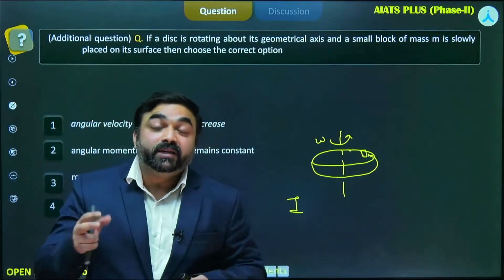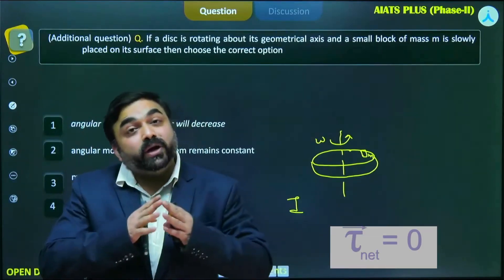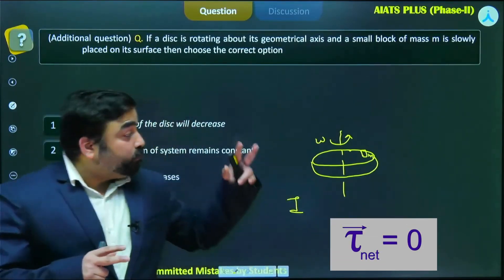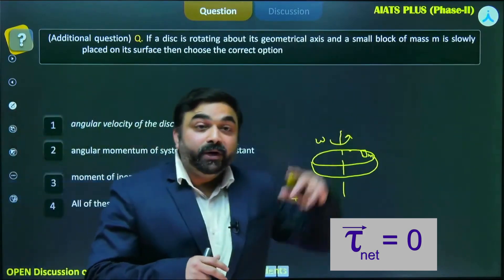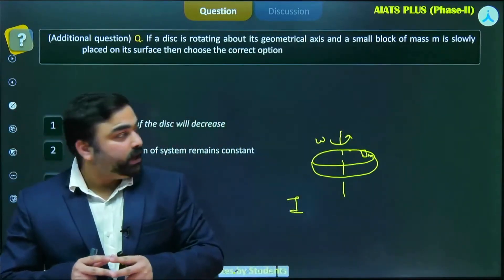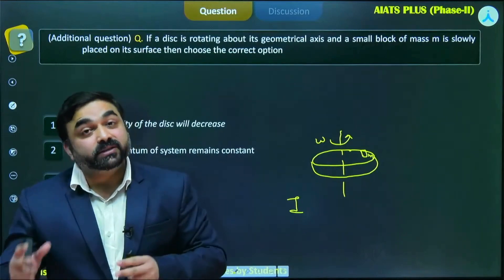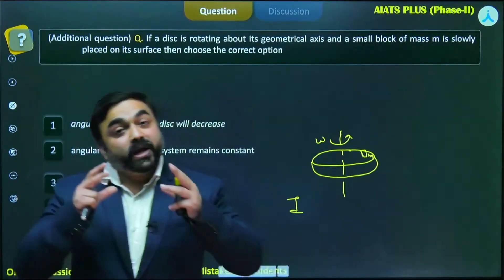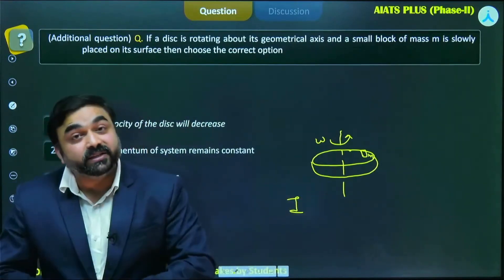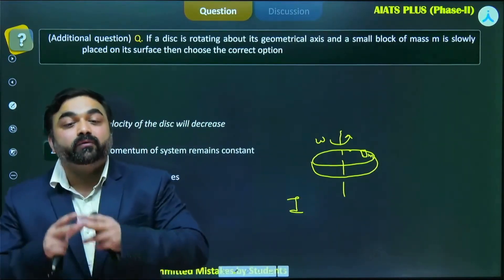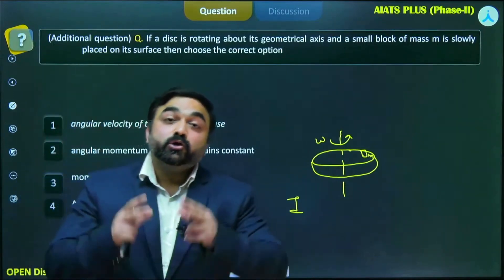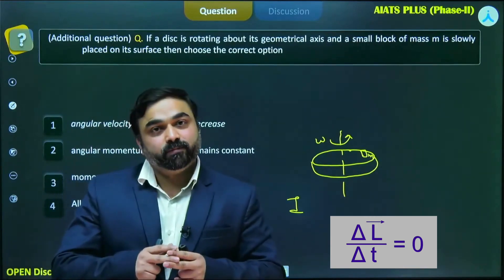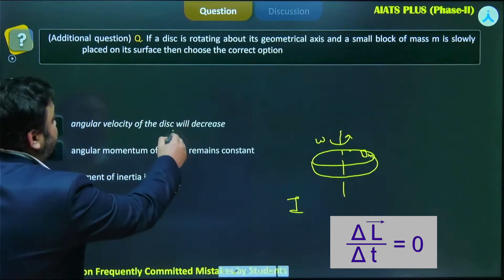...there is no external torque acting on the system. So moment of inertia increases, no external torque means angular momentum will be conserved. If moment of inertia is increasing, then angular velocity has to decrease so that angular momentum is conserved for the system. So option one is correct.